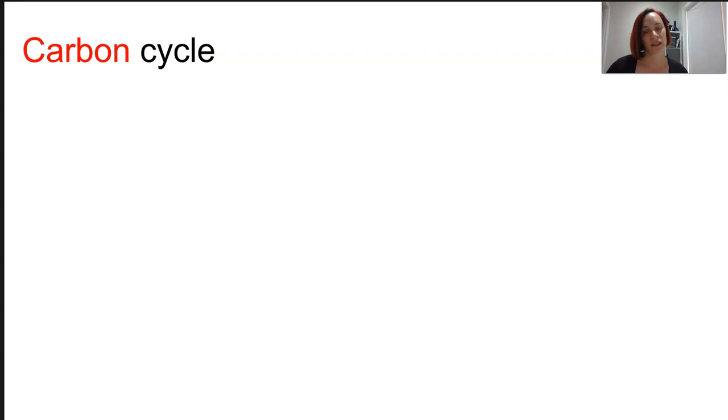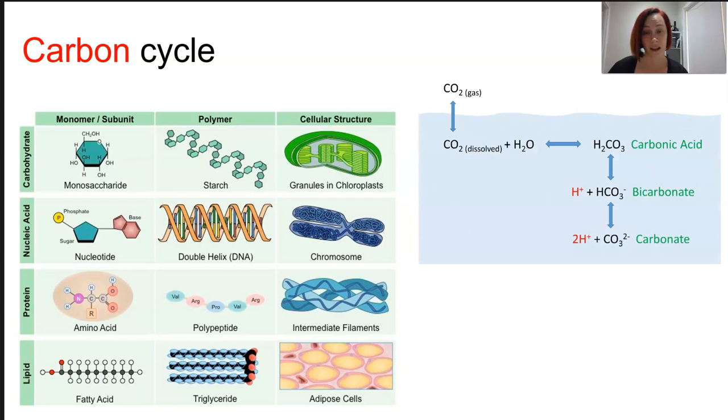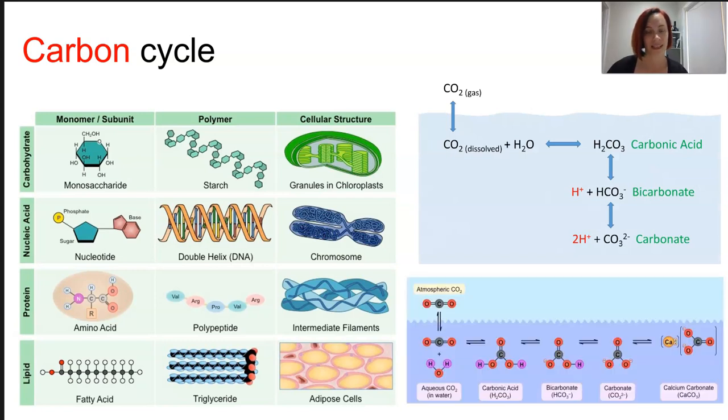The carbon cycle is really important because carbon is the basis of every organic molecule that makes up our cells. So our carbs, our lipids, our proteins, our nucleic acid. It also, however, has a really large range of compounds that exist outside of the biosphere, which allows carbon to cycle in and out. So we often talk about dissolved carbon in the oceans.